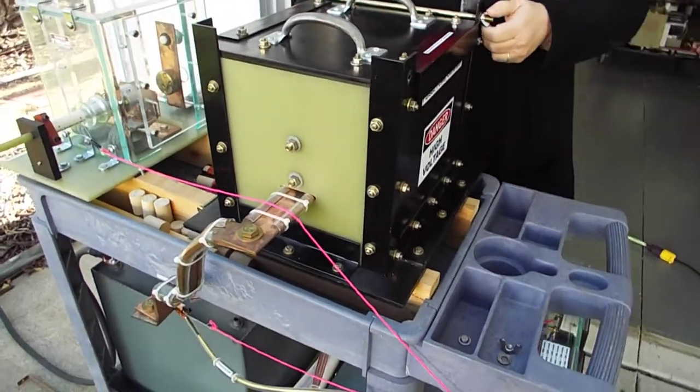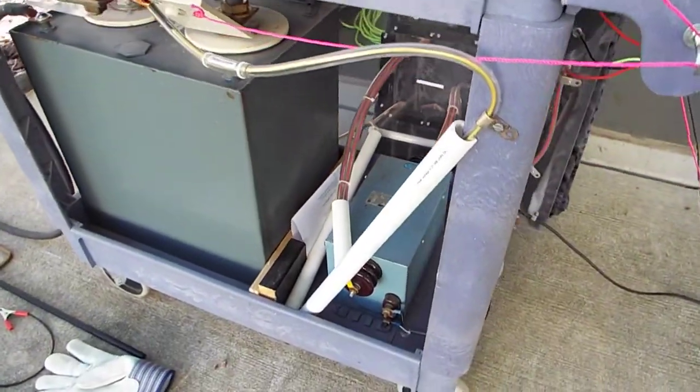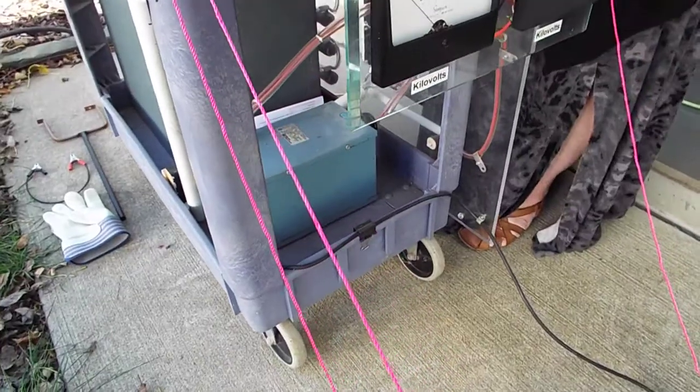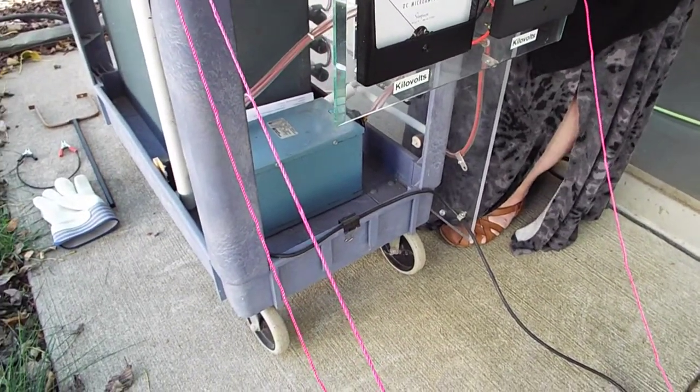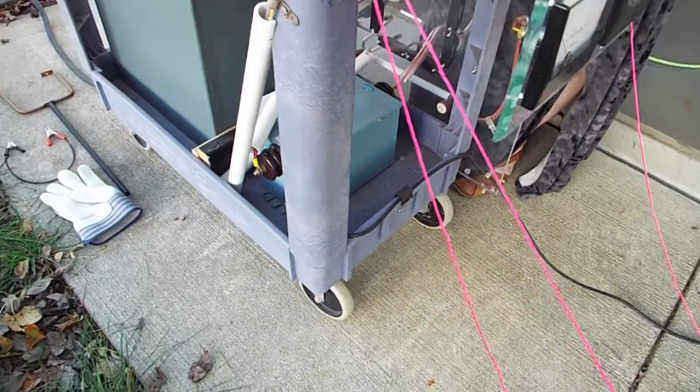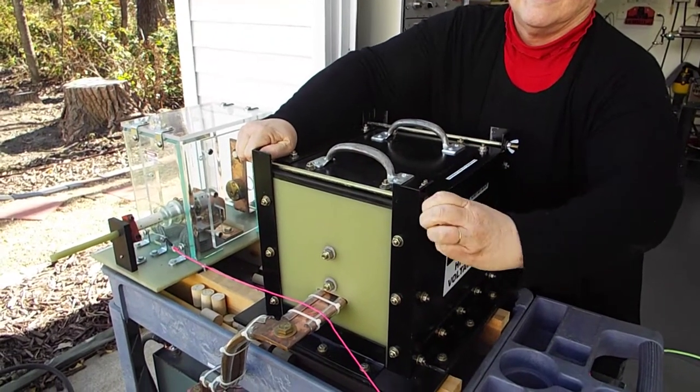While she's doing that, I'll discuss it a little more. This blue box down here is the neon sign transformer. It's a 15,000 volt, 60 milliamp transformer. That's what's used to charge it. And she's almost got it on there. Now this will be a 7,200 joule shot, which will require a 12,000 volt charge on the capacitor.